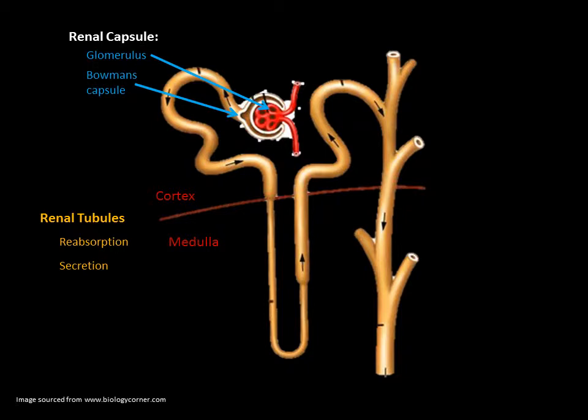The rate at which filtration occurs at the glomerulus is referred to as the glomerular filtration rate, or GFR. GFR averages 125 mls per minute in males and 105 mls per minute in females. It is important that GFR stays consistent, as if the GFR is too high, filtrate passes too quickly through the tubules for reabsorption to occur, resulting in them being excreted in the urine.